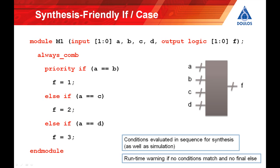The one change that priority does make to the semantics of the if statement is that at least one condition should match. In other words, priority implies that the input conditions are completely decoded. You get a runtime warning from the simulator if none of the conditions are true and there's no final else part to the if statement. In other words, a priority if is expected to have at least one condition that's true or an else part that executes otherwise.